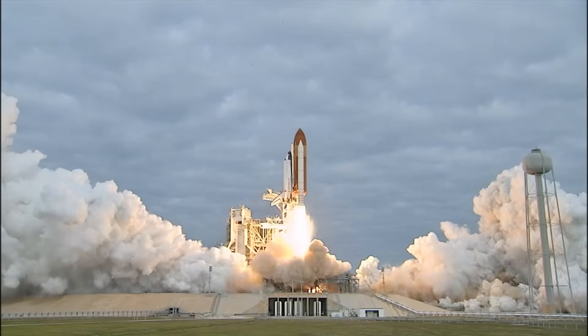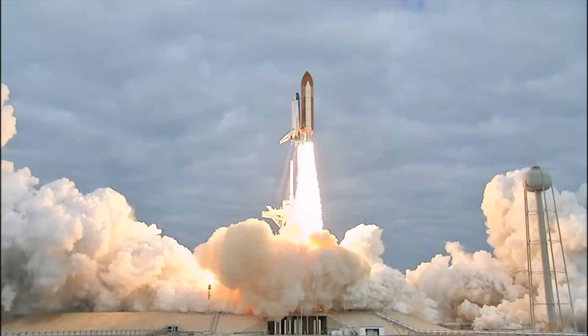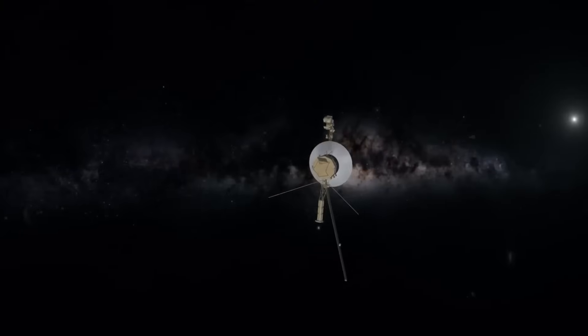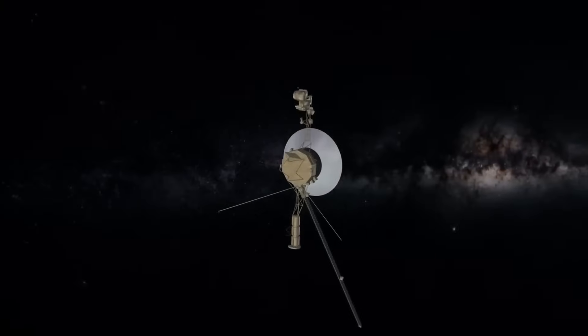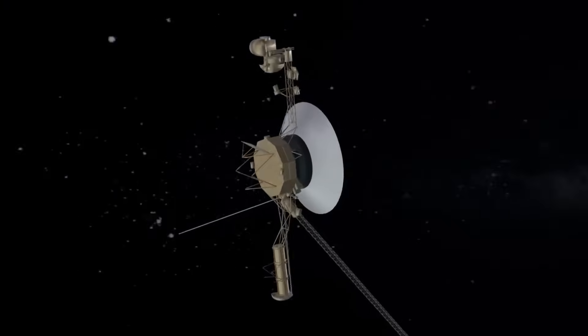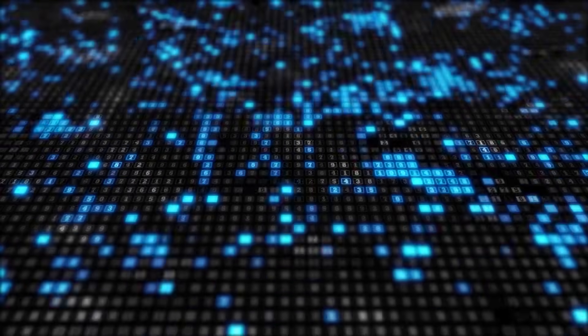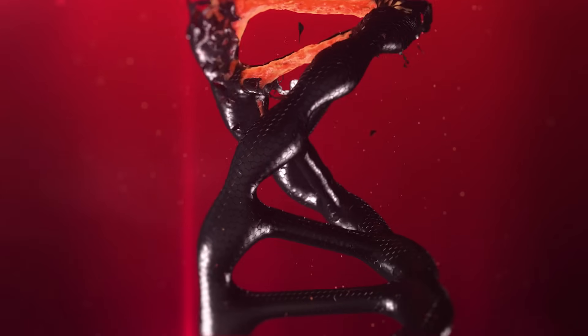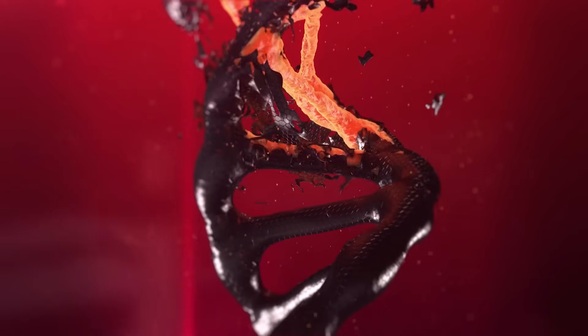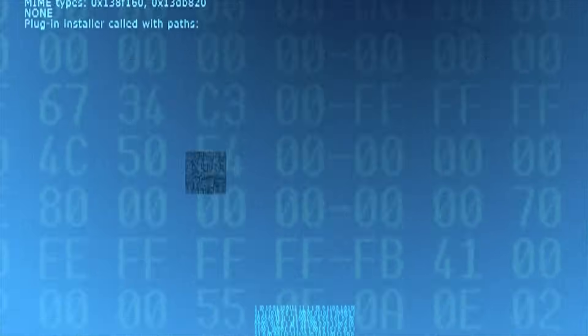NASA's Jet Propulsion Laboratory received what appeared to be a standard telemetry dump from Voyager 2's subsystem diagnostics. But when cross-referenced with earlier logs, analysts discovered something chilling.